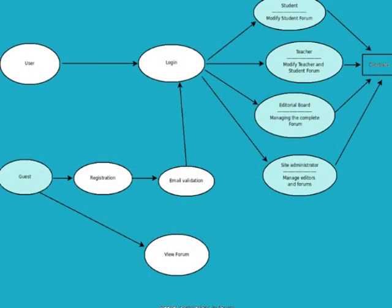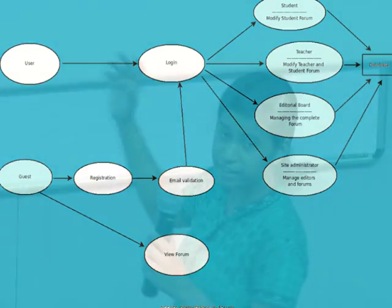This is basically a flow diagram. Guests can only view the forum but can register. After email validation and login, users are placed under four categories: student, teacher, editorial board, and site admin. Students can only access the student forum; teachers can view both forums. The editorial board can manage the complete forum, and the site admin can manage and delete editors.